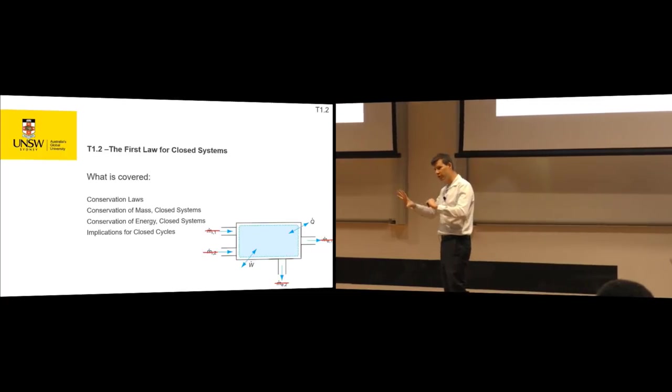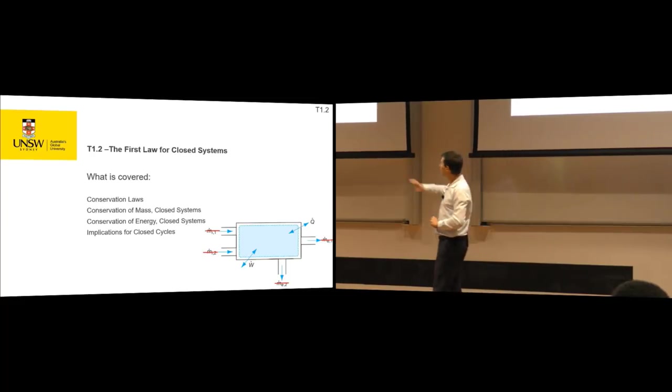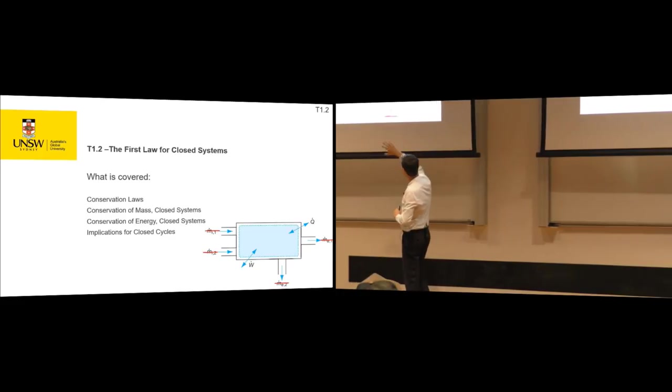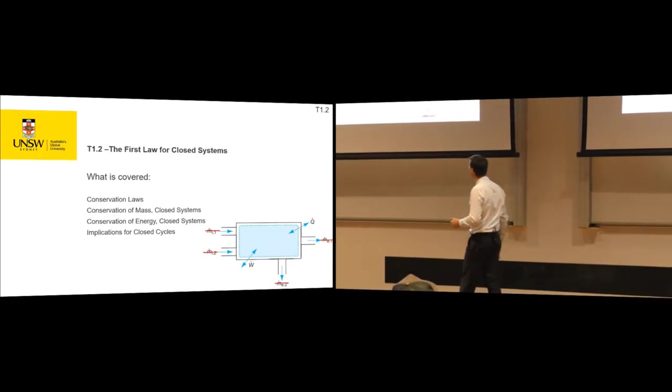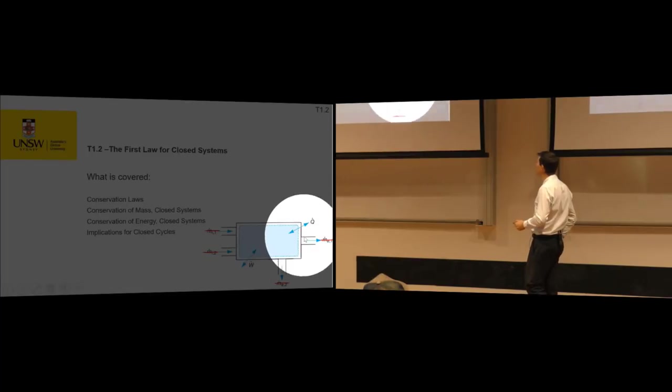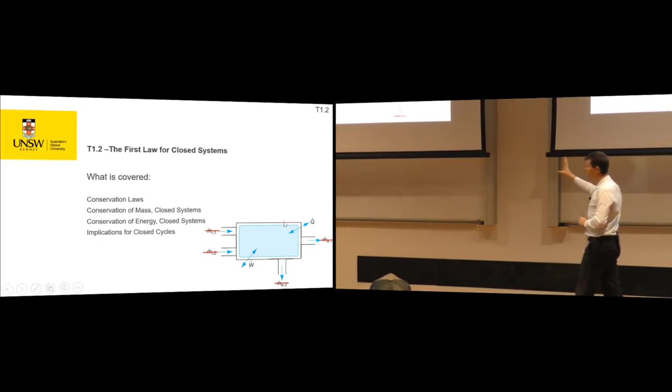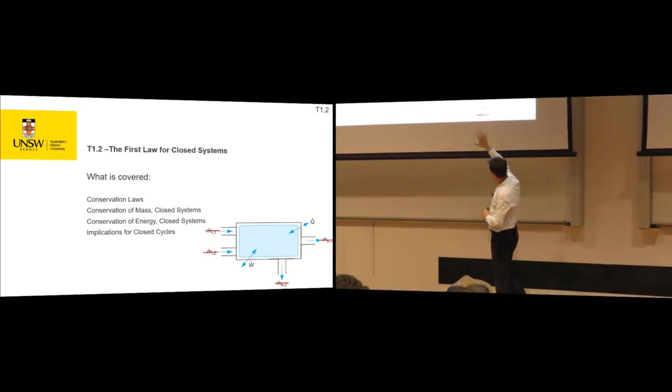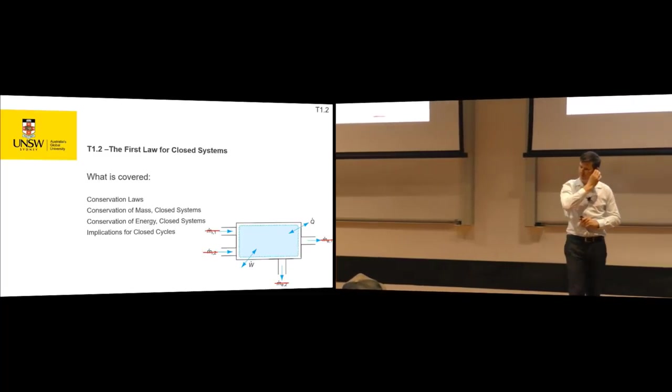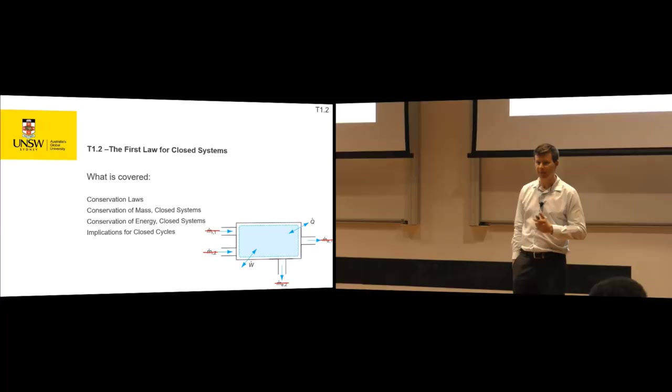So this is first law of closed systems. I did introduction to the first law of thermodynamics. This is then the first law for closed systems. We've got our box down the bottom and I've closed off the inlets and the outlets. So there's no mass in and no mass out, but we can still have work occur on the system and we can still have heat flow across the boundary for the system. Now we just pair it right back, make it simple.